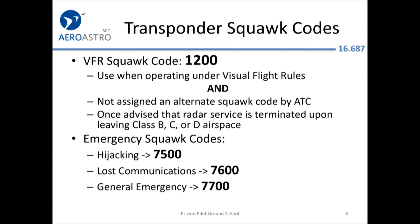There are also a couple of other important ones. In case you get hijacked, you need to enter squawk code 7-5-0-0. Please don't enter this unless you mean it. You might hear someone say 'confirm transponder squawk code 7500' — maybe they don't want your hijacker to know what's happening. If you confirm, that means you've been hijacked, and you might see a special plane come fly up next to you. So please only use this if necessary.